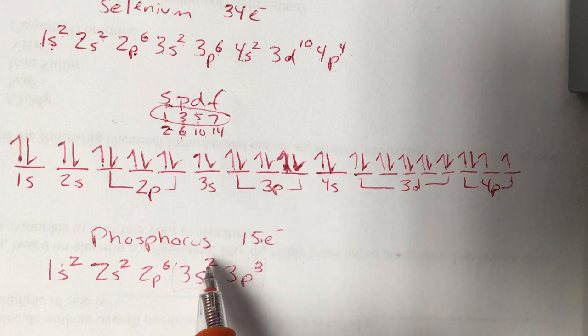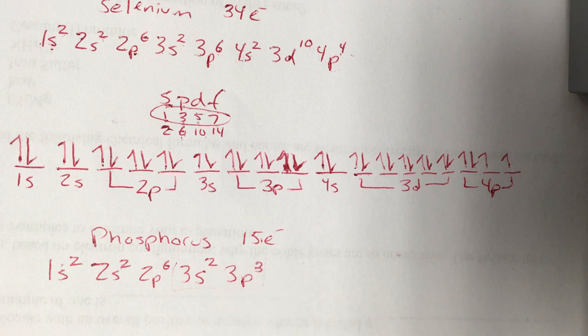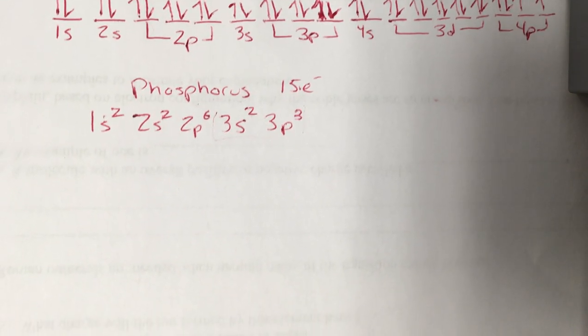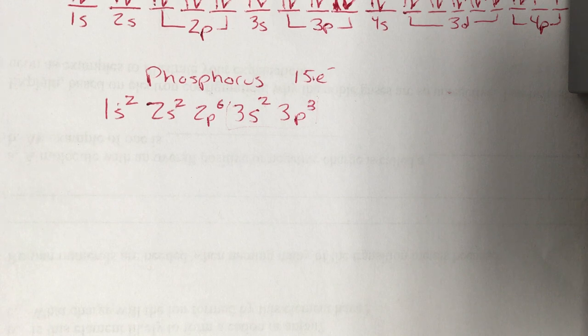You can check your valence electrons to make sure you did it right. Level 3 is our topmost level. 2 plus 3 is 5. Phosphorus is in group 15. It's supposed to have 5. Three energy levels. There's a lot of ways to make sure that we're on the right track with this.